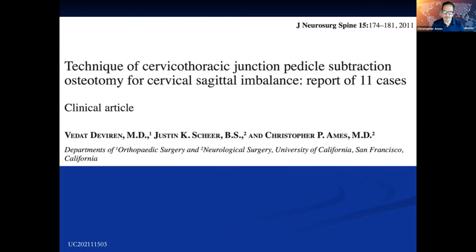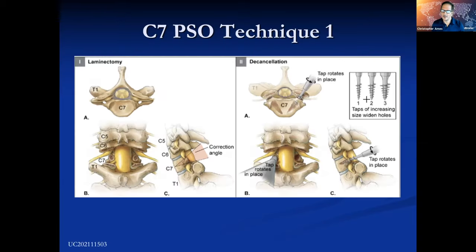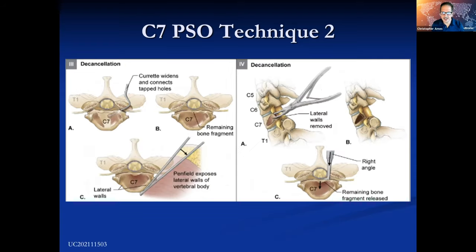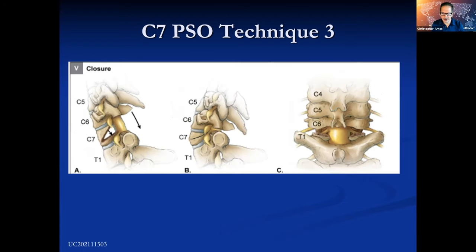We published our technique for cervical three-column osteotomies in the Journal of Neurosurgery Spine in 2011. Just a couple of pearls: number one, the space available for a cervical three-column osteotomy is much less than in the lumbar spine. We developed conical taps that are very useful to decancellate between the nerves without using a high-speed burr. You can use a lumbar tap to do this. Otherwise the technique is quite similar to what you do in the thoracolumbar spine — we dissect the lateral border of the vertebral body.